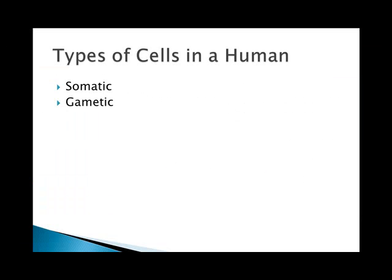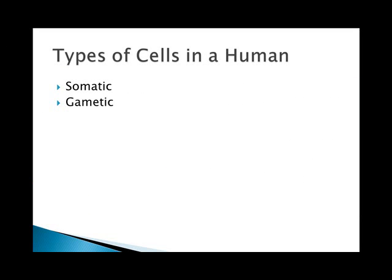There are two types of cells in a human being. There are somatic cells, which make up the body and they reproduce by mitosis. Humans have 46 chromosomes, or 23 pairs of chromosomes, in their somatic cells. Gametic cells are also known as the sex cells — the sperm and egg in humans, but they could be pollen and ovules in plants. They reproduce through a process called meiosis, which we will cover in the next lecture, and each has 23 chromosomes, so it has half the number as a somatic cell.